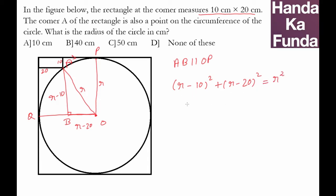Now all you have to do is solve this quadratic, but I recommend trying with the options — it's a lot simpler. Can R be 10? No, because 10 minus 20 would not be possible for the length of AB. Can it be 40? If it is 40, I get 30 squared plus 20 squared equal to 40 squared, which is definitely incorrect.